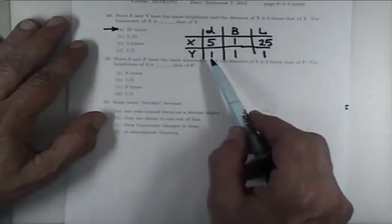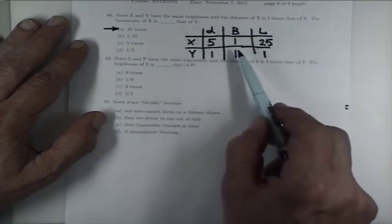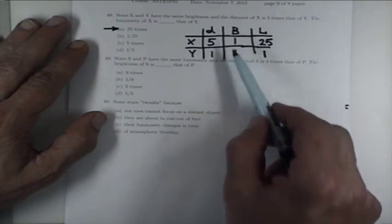Then you know the distances of them. You pick arbitrarily the closer one to be at the unit distance, then the more distant one is five times more distant. They are equally bright. You choose units so that the brightness of each is one, and then you just apply this formula to figure out the luminosity.